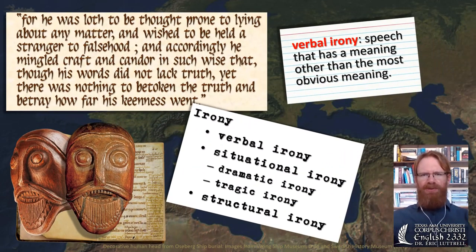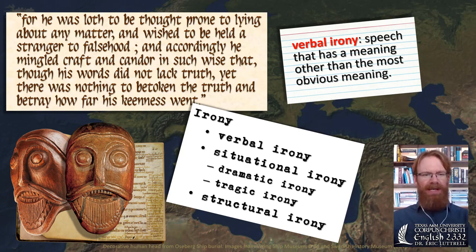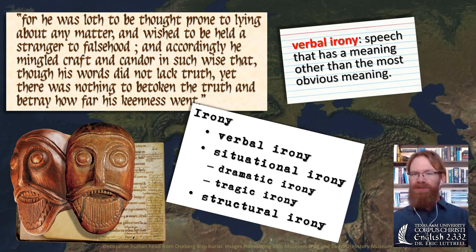Although he was pulling off this deception, he didn't want to be known as a liar. As Saxo tells us, he was loath to be thought prone to lying about any matter. And accordingly he mingled craft and candor — that is, guile as well as secrecy — in such a way that though his words did not lack truth, yet there was nothing to betray how far his keenness went. In other words, he wasn't lying, but the words weren't so obvious that they would give away how intelligent he was and that he was planning revenge. And so this is a kind of irony.